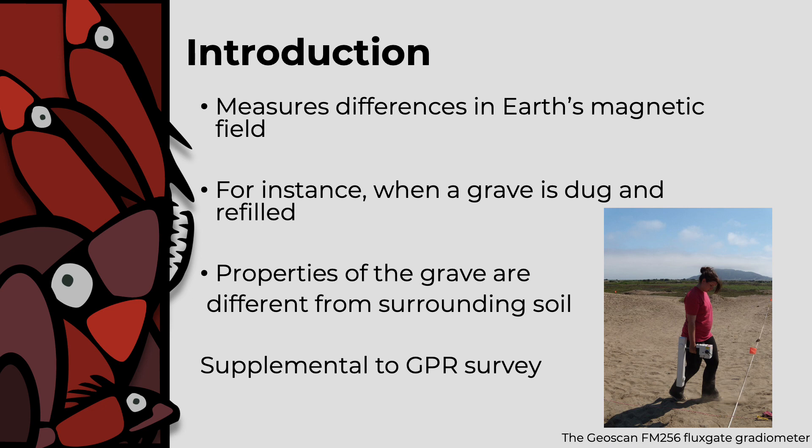Magnetometer survey is one of several magnetic geophysical techniques that measure differences in the Earth's magnetic field and/or differences in the magnetic properties of the ground. These differences can occur for numerous reasons, including instances where the ground is disturbed, as is the case when a grave is dug and refilled.